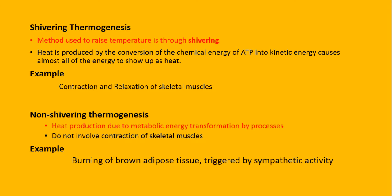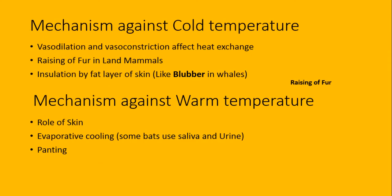Non-shivering thermogenesis کیا ہے: heat production due to metabolic energy transformation by the processes۔ اس میں muscles involved نہیں ہوتے، اس میں metabolic energy body سے ملتی ہے۔ وہ metabolic energy اس طرح مل سکتی ہے کہ ہم اپنے fats کو - brown adipose tissue کا جو fat ہے جو lipids کی layer ہوتی ہے - اس کو burn کر سکتے ہیں، اور یہ sympathetic activity کے ساتھ trigger کرتی ہے۔